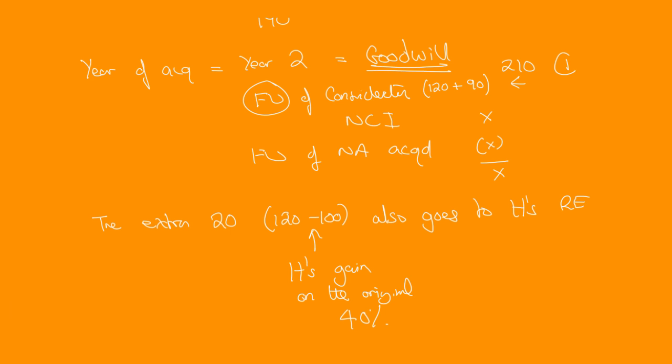So there's the two things to remember. Number one, you've got the fair value of both amounts in the year of acquisition, and then the extra from the original one needs to go to H's retained earnings. As always, best done by trying questions, which is what we're going to go and do now.